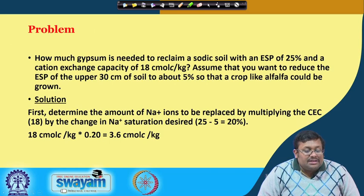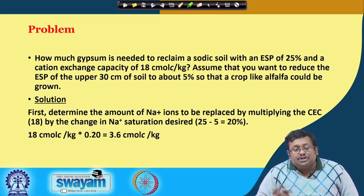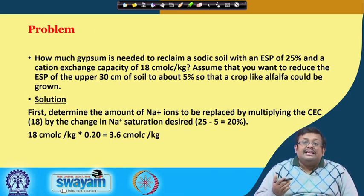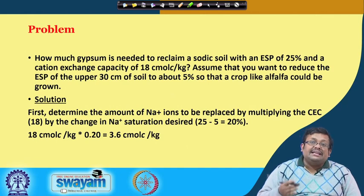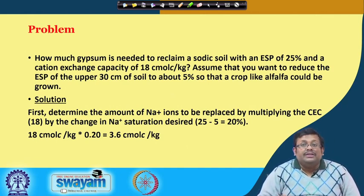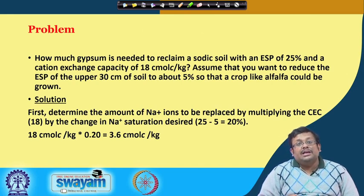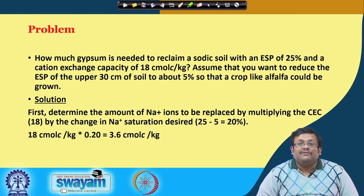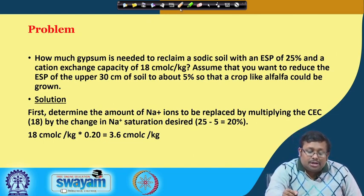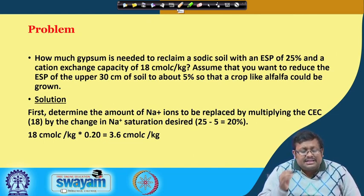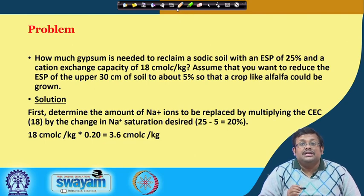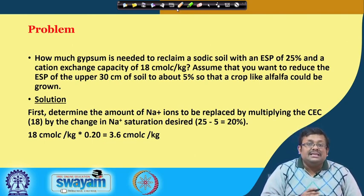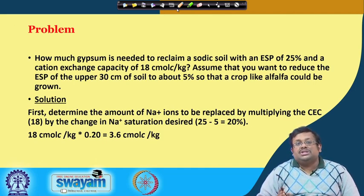Now, how much gypsum is needed to reclaim a sodic soil with an ESP of 25% and a cation exchange capacity of 18 cmol charge/kg? Assume we want to reduce the ESP of the upper 30 cm to about 5% so that a crop like alfalfa could be grown. First, determine the amount of sodium to be replaced by multiplying the CEC (18) by the change in sodium saturation desired.